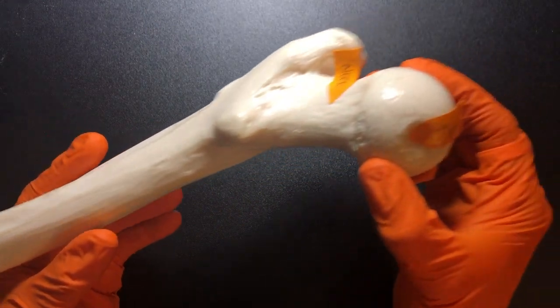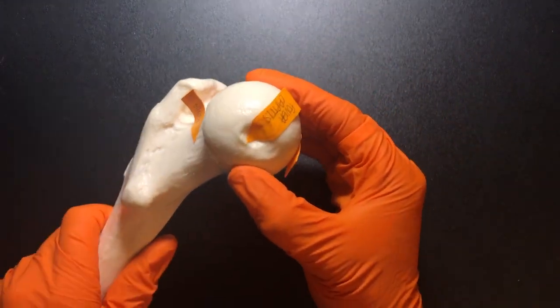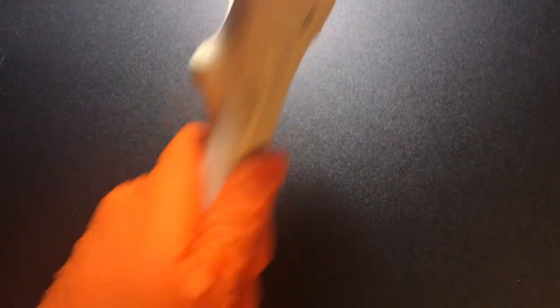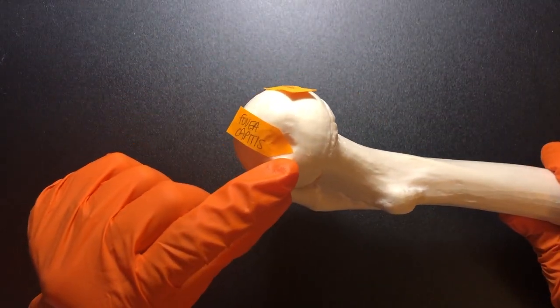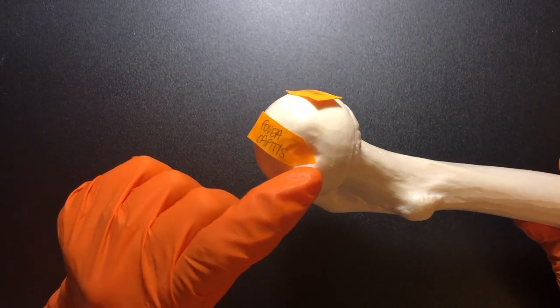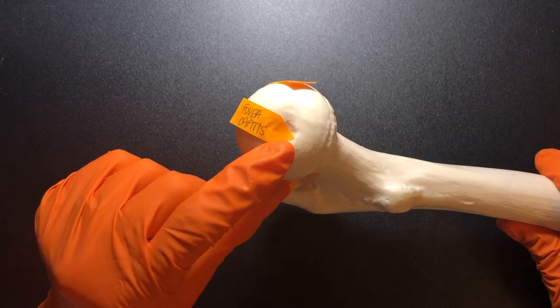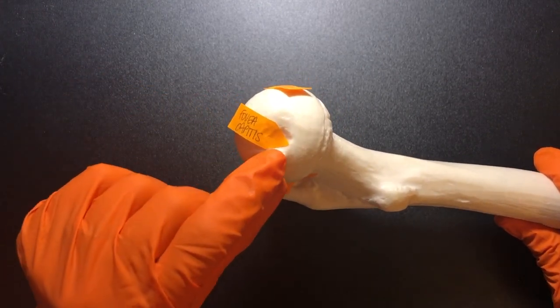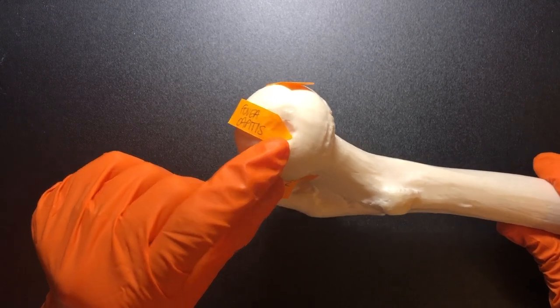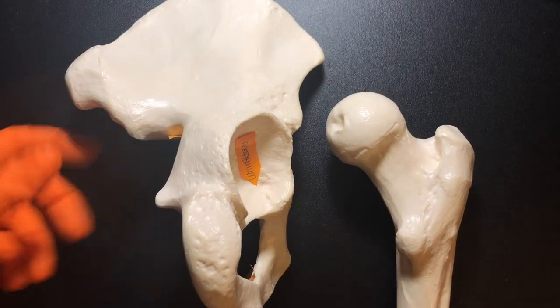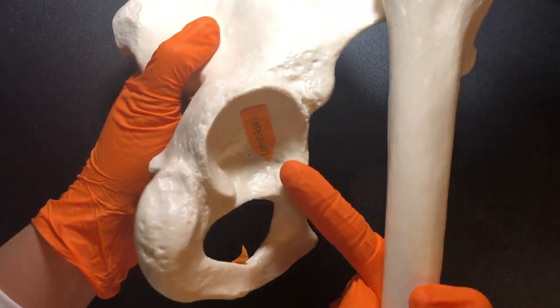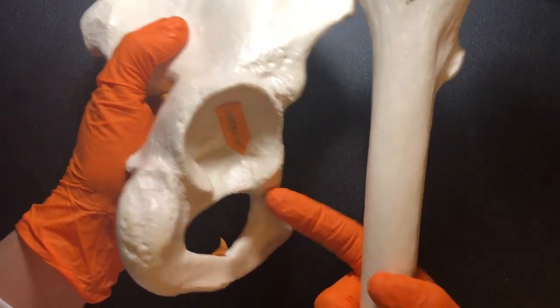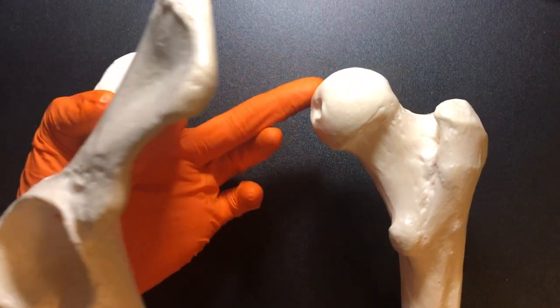One other thing I want to show you on the head of the femur is this little depression called the fovea capitis. And the fovea capitis is a deep insertion point for a muscle called the ligamentum teres. So let me show you how these two bones articulate. Again, we have the acetabulum of the coxal bone. And then we have the head of the femur.